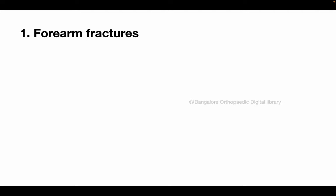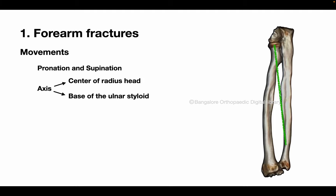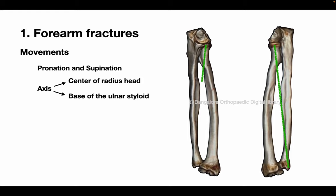First let's look at the forearm movements. The proximal and the distal radio-ulnar joints along with the radio-ulnar interosseous space are responsible for pronation and supination movements. The axis of pronation and supination passes from the center of the head of the radius through the interosseous space to the base of the ulnar styloid. Note that the radius rotates over the fixed ulna. Presence of adequate interosseous space is essential for a normal range of pronation and supination.